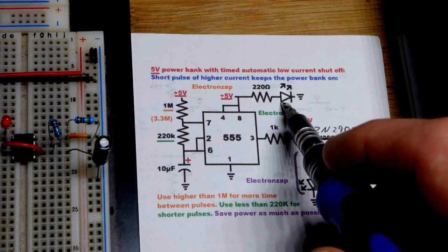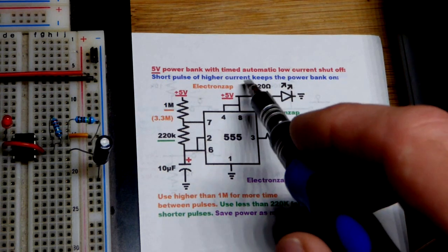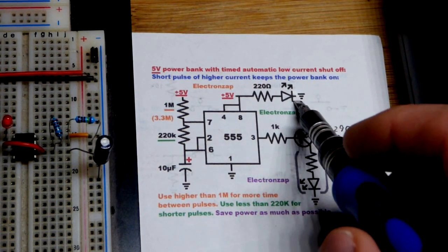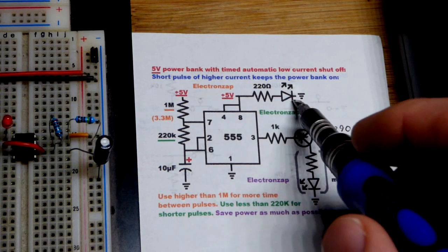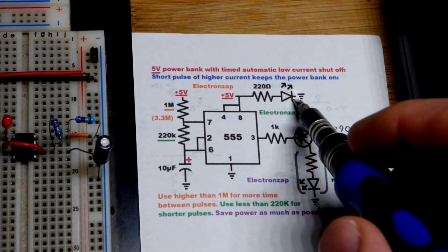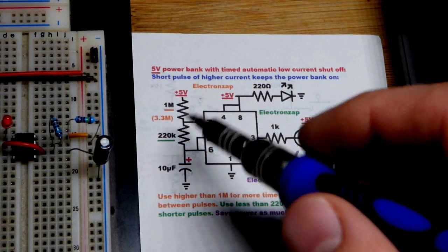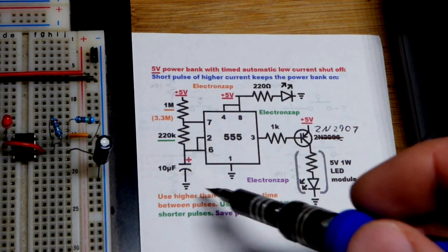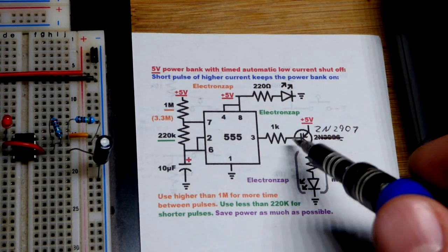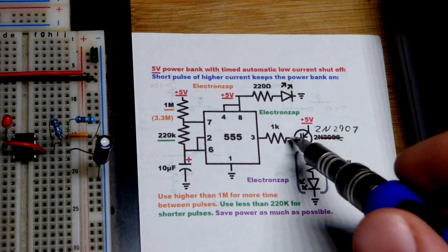It doesn't really have a power button where it stays on, it will automatically shut off if it is not providing enough current. So LED is not enough current to keep a lot of power banks from shutting off, so we added a 555 timer here.